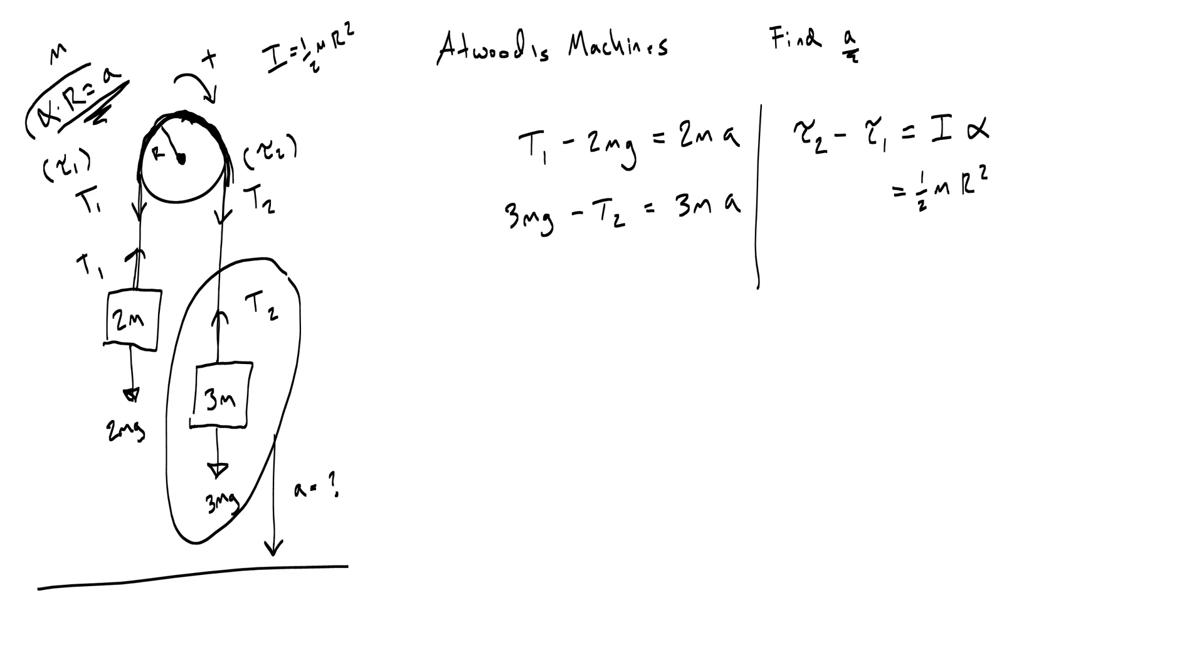Now, alpha, we already talked about, is actually going to be the acceleration divided by the radius, right? I can write acceleration over the radius, so if I plug that in, I'm going to get a over R, and immediately, I see that I can get rid of that R squared and the R down under the acceleration. Okay, so I'm just going to erase those, so it's a little bit easier to see what's on the right-hand side.